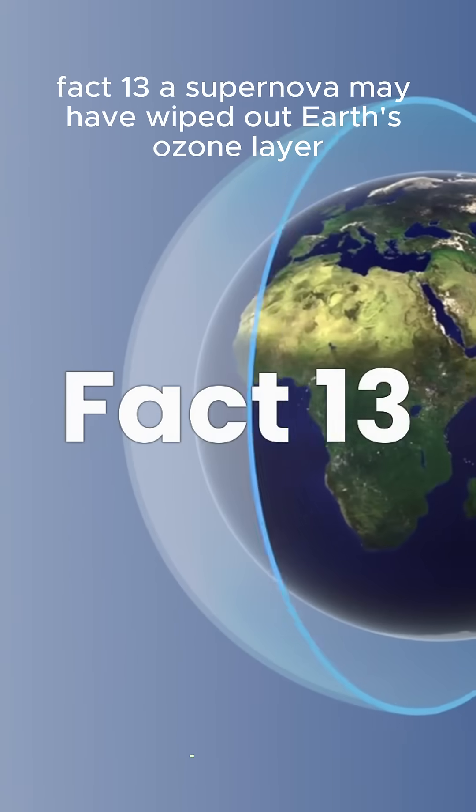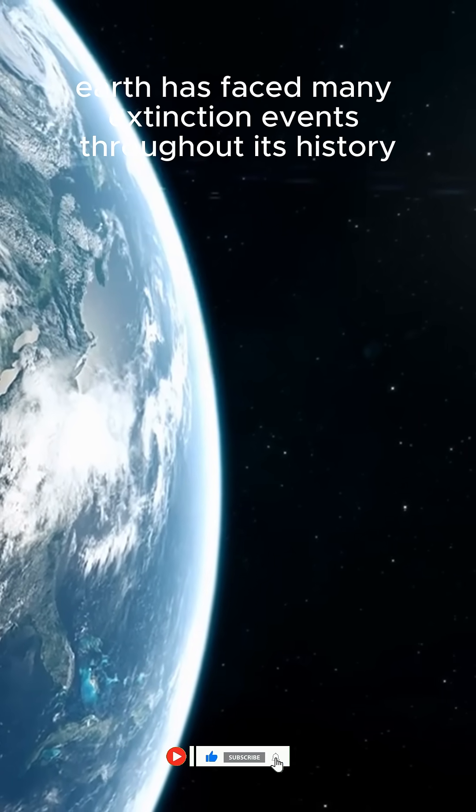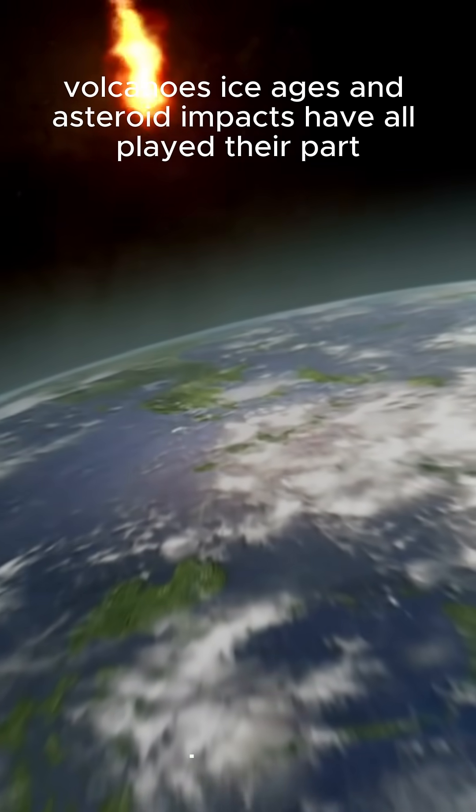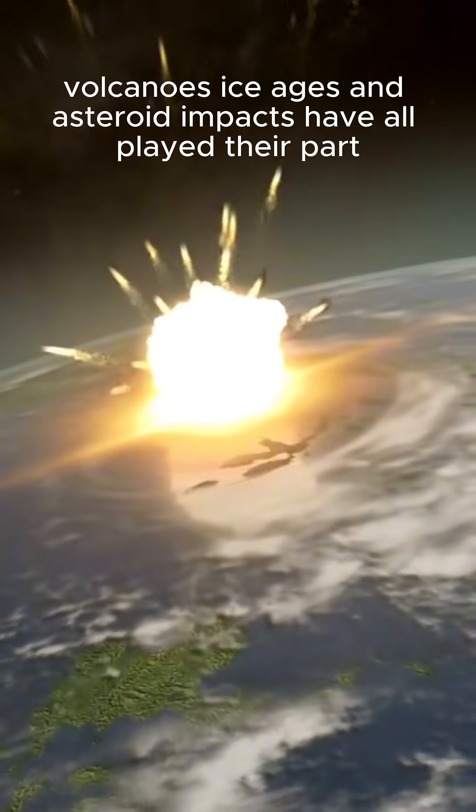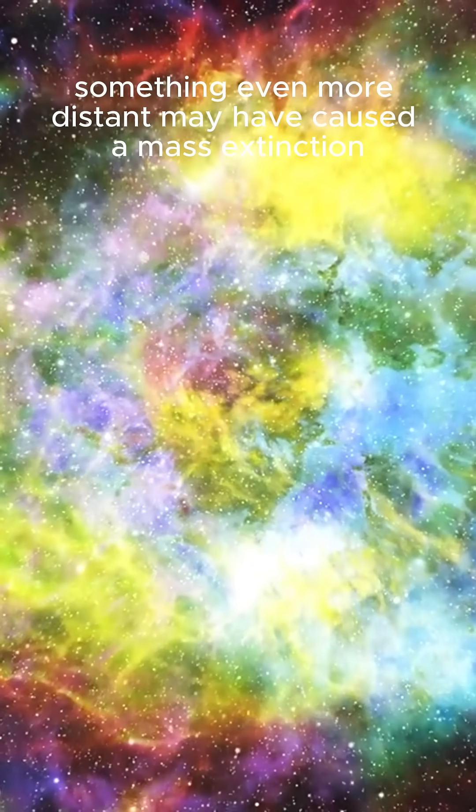Fact 13: A supernova may have wiped out Earth's ozone layer. Earth has faced many extinction events throughout its history. Volcanoes, ice ages, and asteroid impacts have all played their part. But 360 million years ago, something even more distant may have caused a mass extinction.